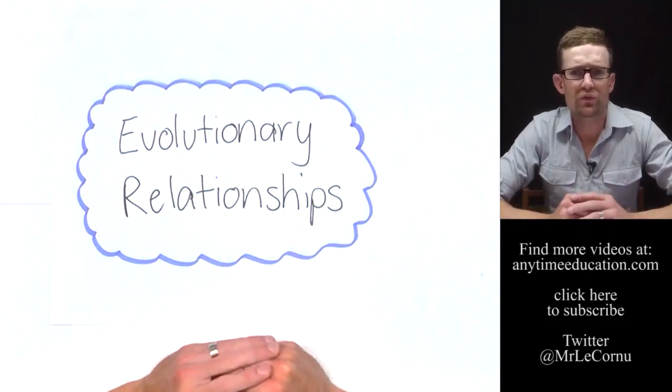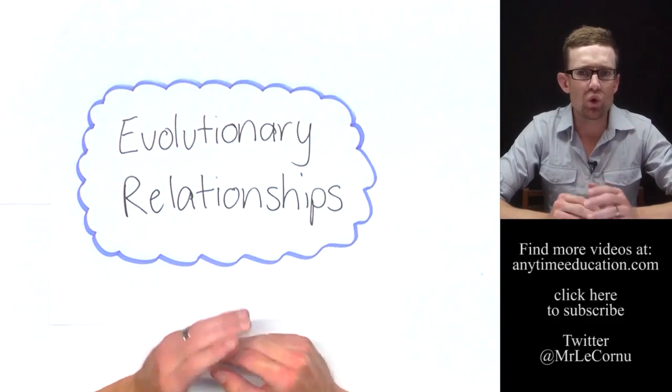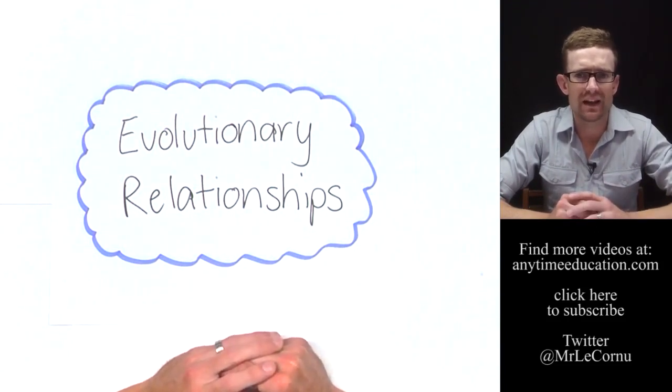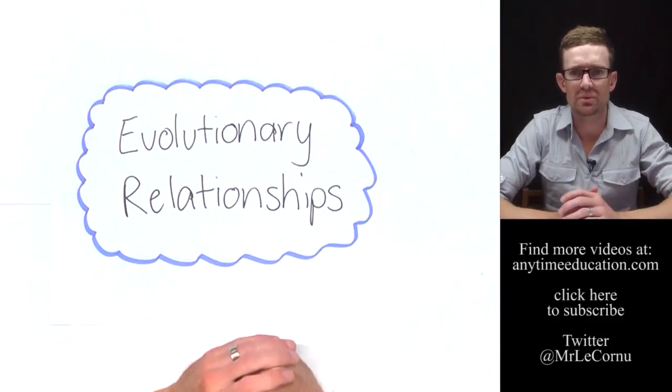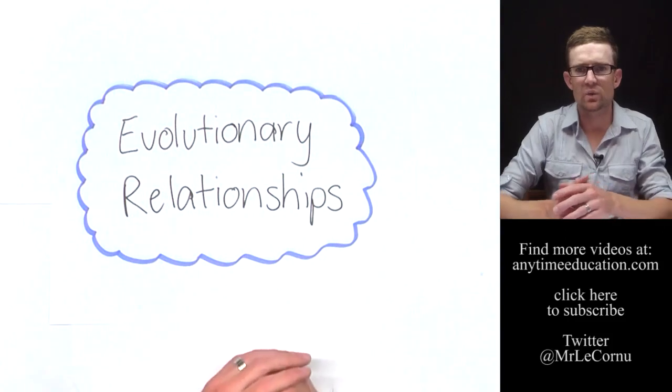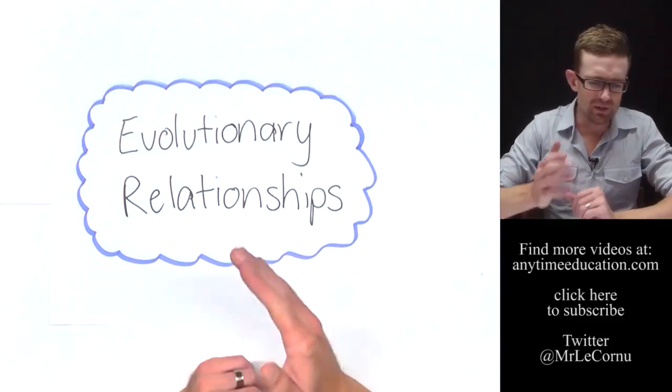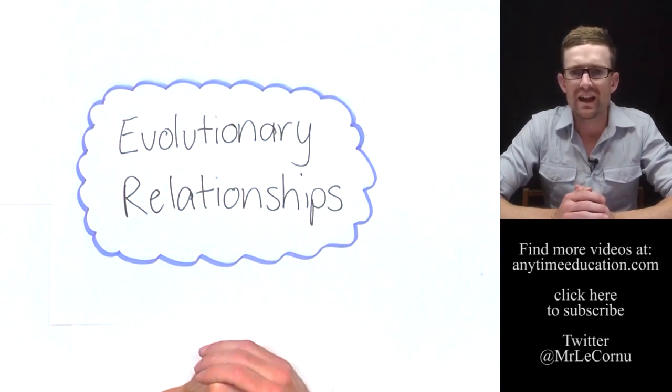So we know that all life evolved from a single origin, and this means that all living things have a common ancestor at some point in time. The interesting question is how do we determine the relationships between species? How do we tell which species are closely related and which species are more distantly related? Well that's what we're going to look at in this video on evolutionary relationships, and it has a lot to do with using the DNA nucleotide sequence or the protein amino acid sequence. Let's get stuck in.